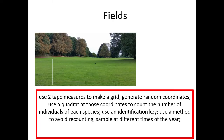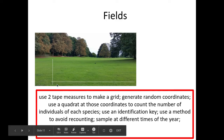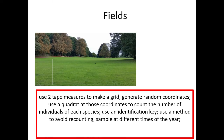If you're measuring fields, a good way to do this is to use transect lines on a grid, and you'd use grid coordinates chosen randomly beforehand, then use your quadrat as discussed. You'll notice in the red boxes that the same things keep coming up from the mark scheme: identification keys, avoiding recounting, and using different times of the year.